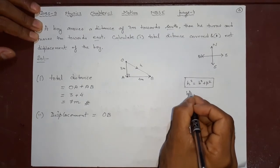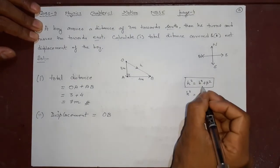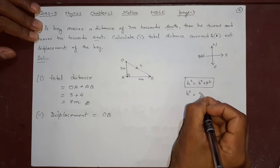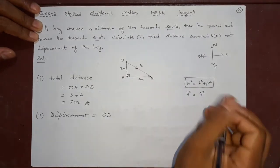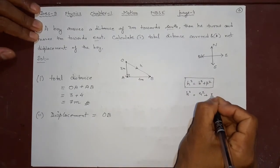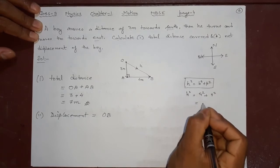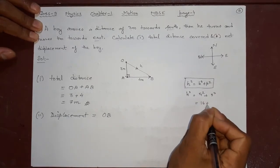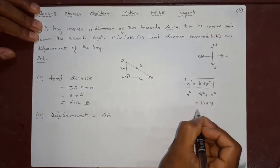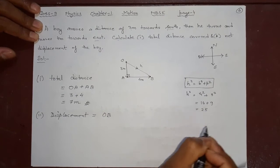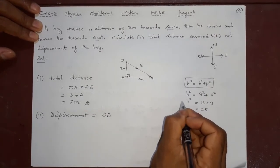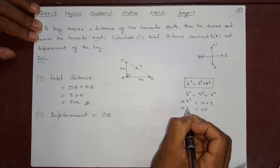So how we will find it here? H² = B² + P². This is the formula of Pythagoras theorem. Now what is H²? B² is 4², base is this one. What is P²? 3². 4² is 16, 3² is 9. Together it is 25. H² is 25.